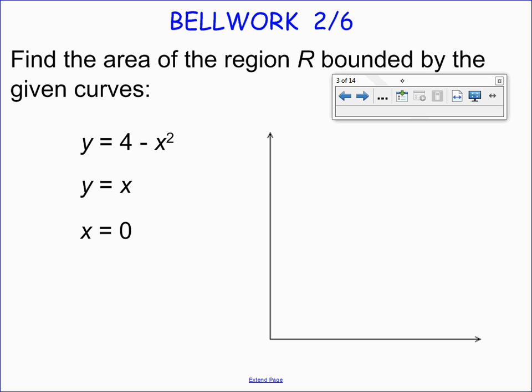If we look at y equals 4 minus x squared, I know that's a parabola, same steepness as my parent function, but opens upside down with the vertex of 0, 4. Y equals x is our identity function. This is our line with positive slope up 1 over 1. It goes to the origin. And x equals 0 is the y-axis. So let's go ahead and get a picture and see what that looks like.